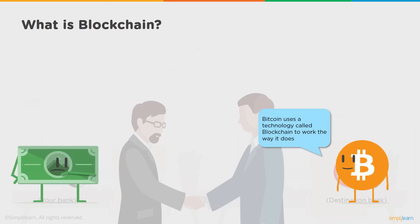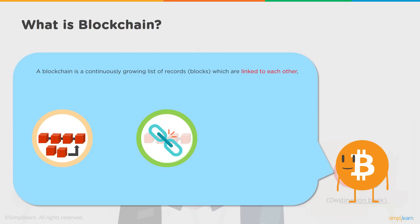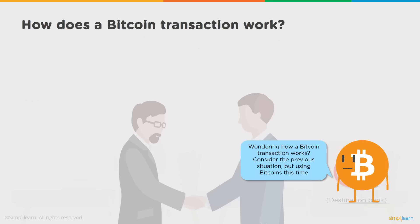Bitcoin uses a technology called blockchain to work the way it does. Blockchain is a continuously growing list of records which are linked to each other — a list of blocks chained to each other and secured using cryptography. Each and every block is digitally signed and hashed.